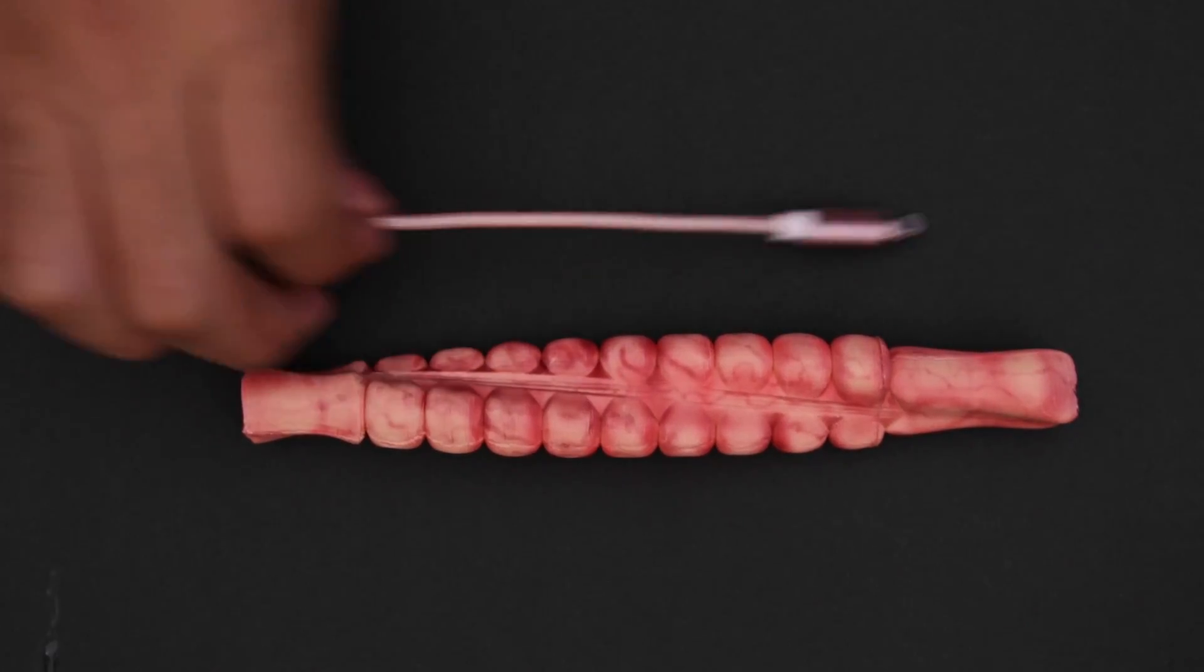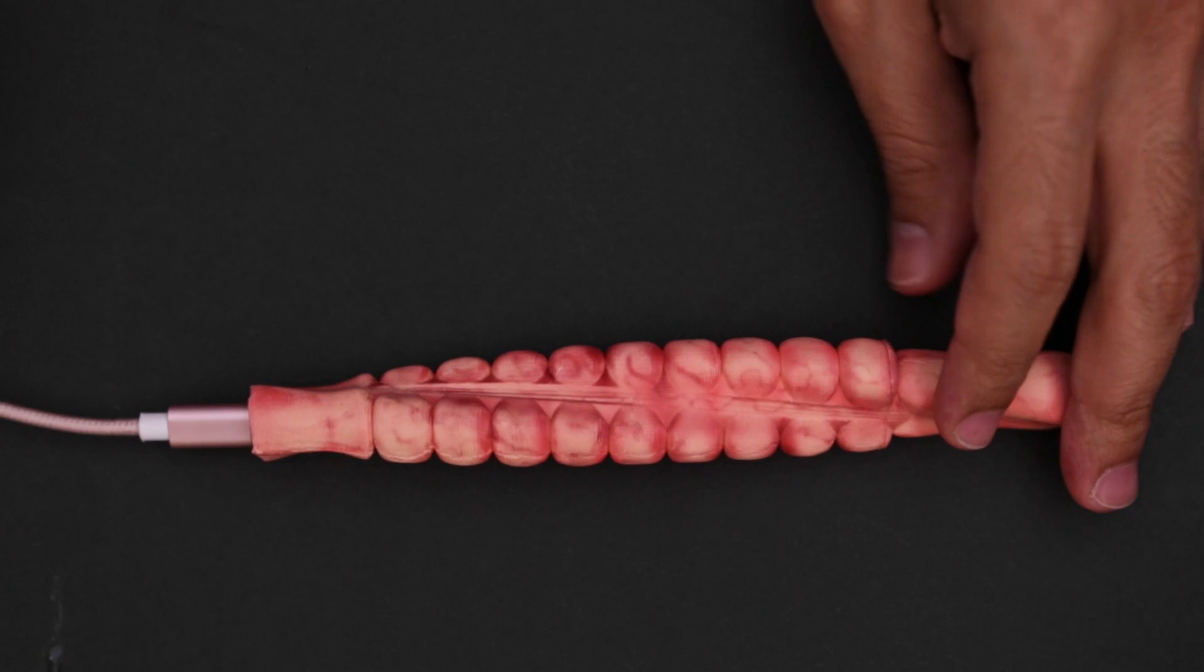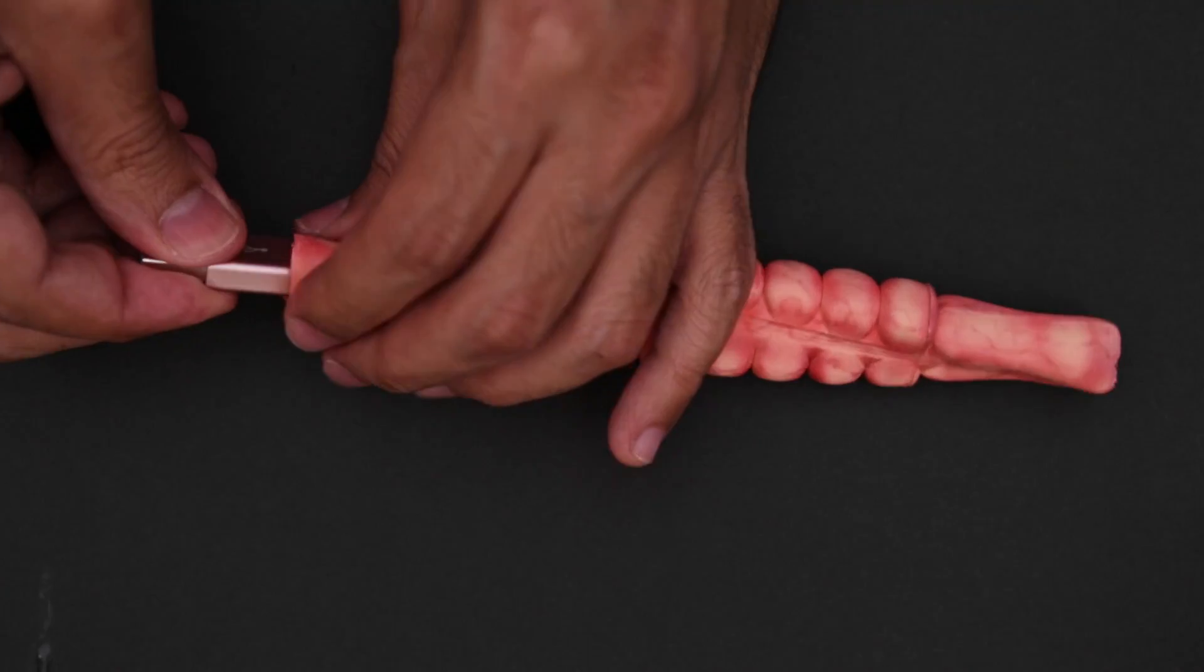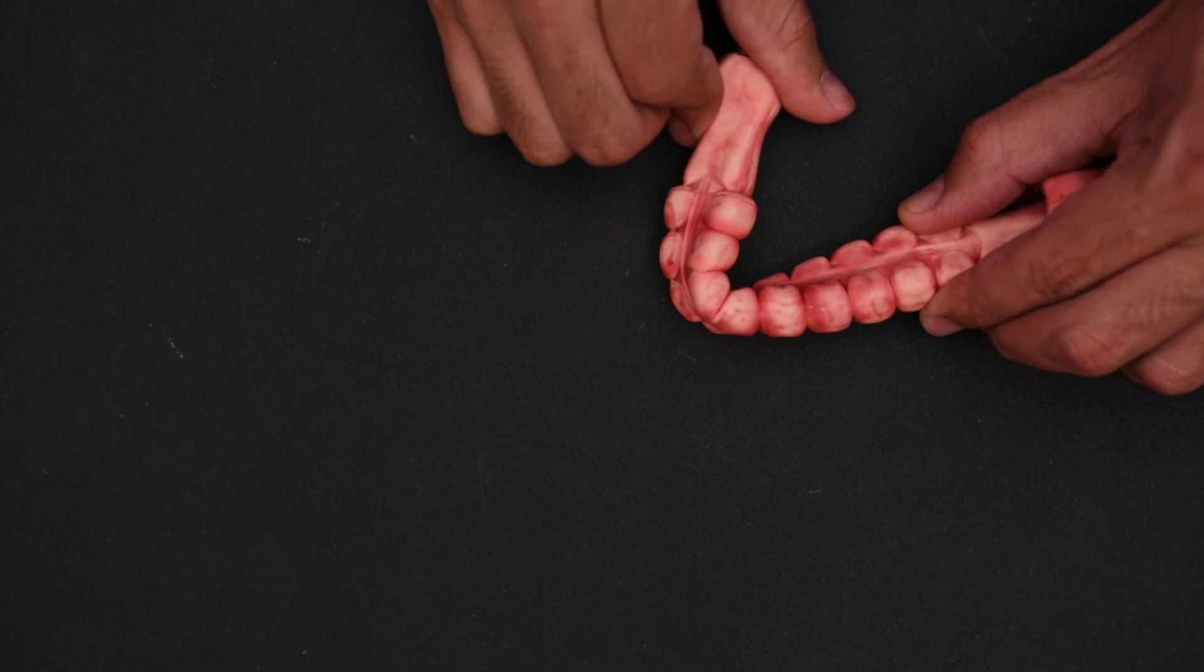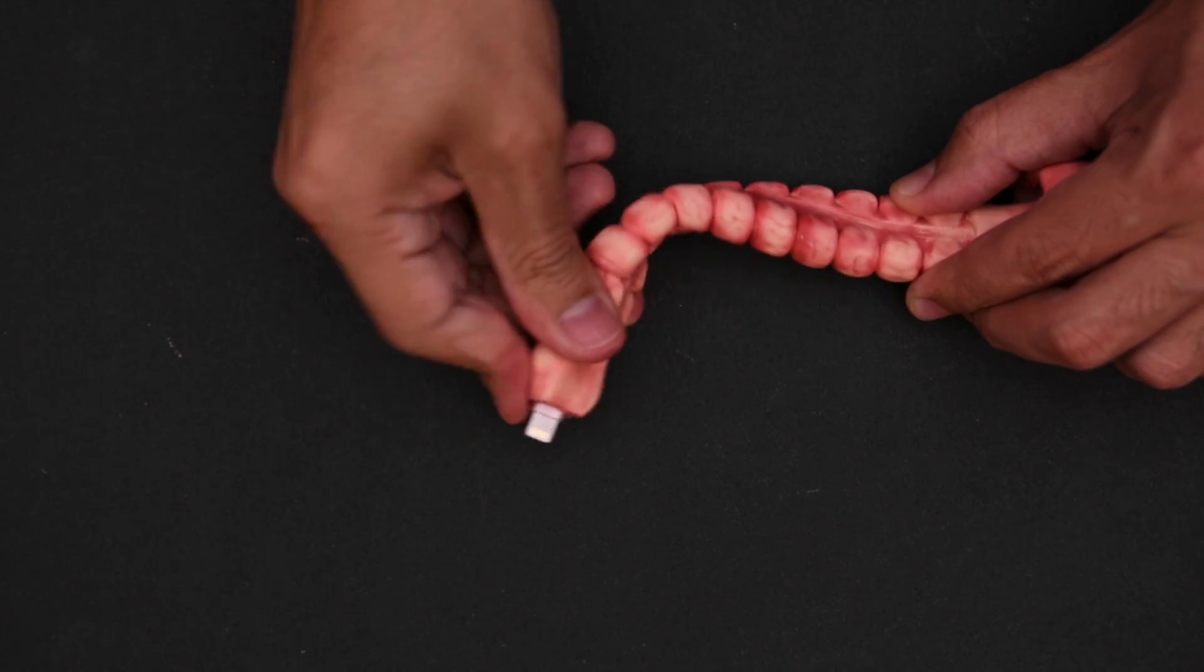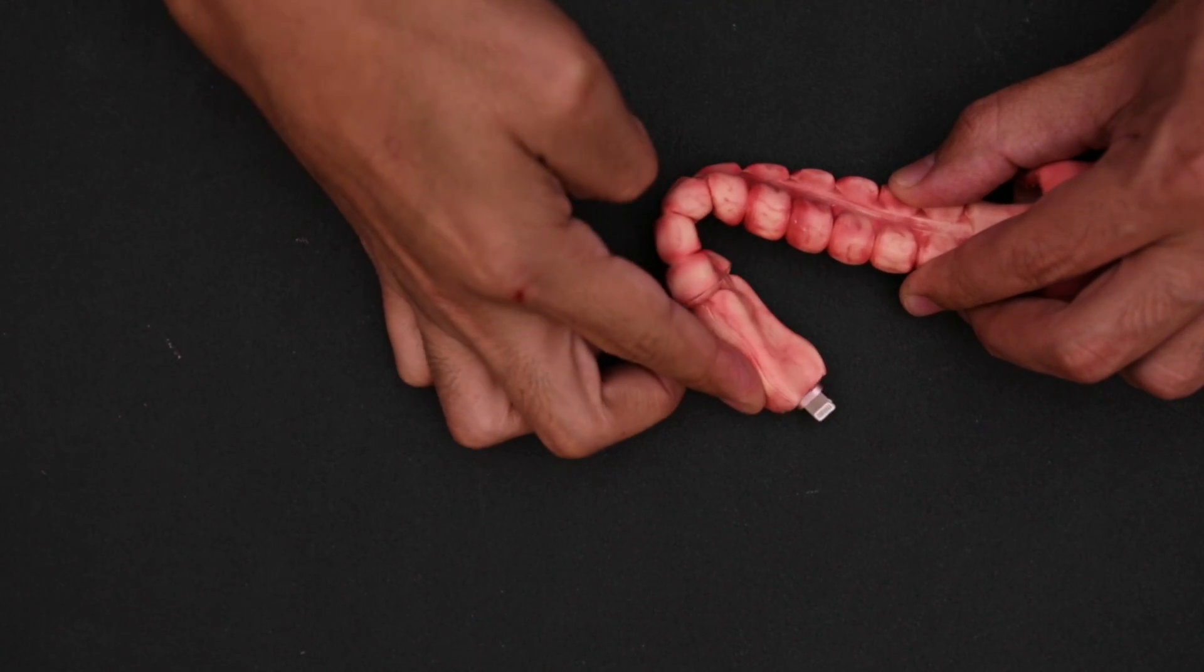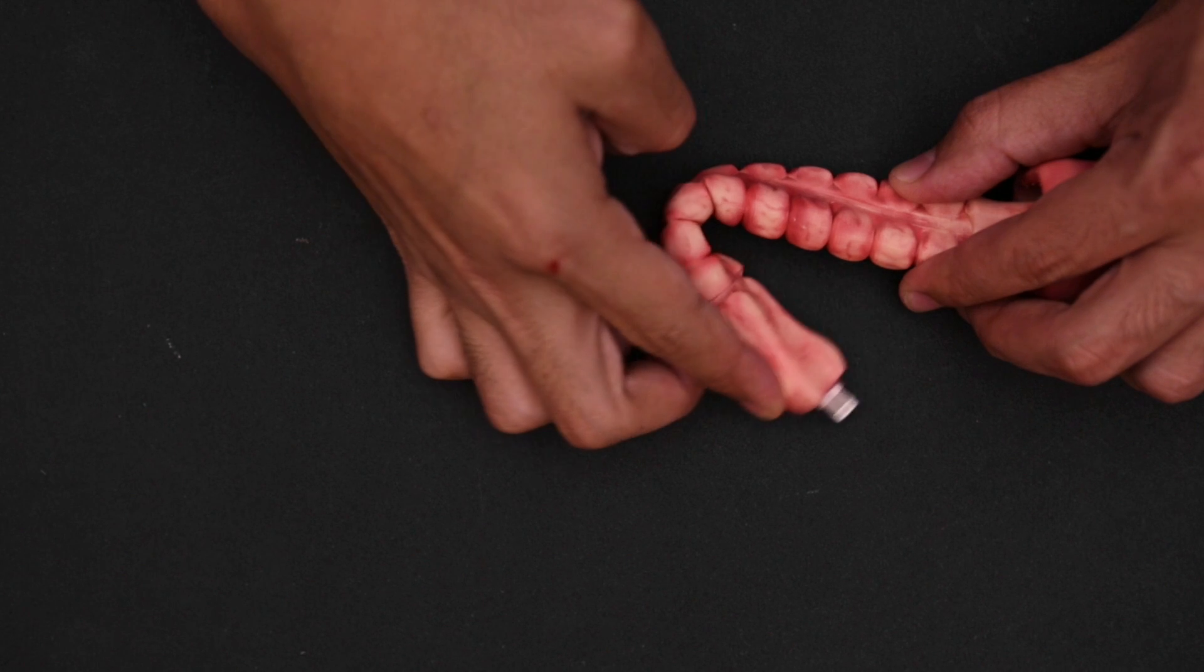Once we were happy with the look, we then threaded our charging cable through the part. The USB port has a snug fit, so it holds on pretty nicely. We really like how this actually has a useful application besides just looking gross. It also acts as strain relief for the cable.